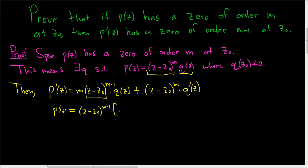And if we do that we're left with m q of z, and it looks like here we're going to have plus z minus z naught to the first power and then q prime of z.